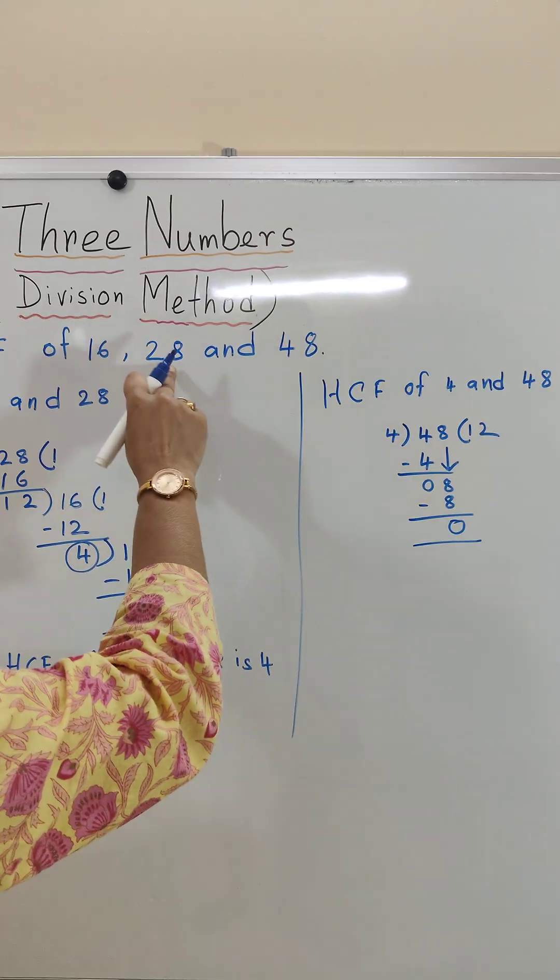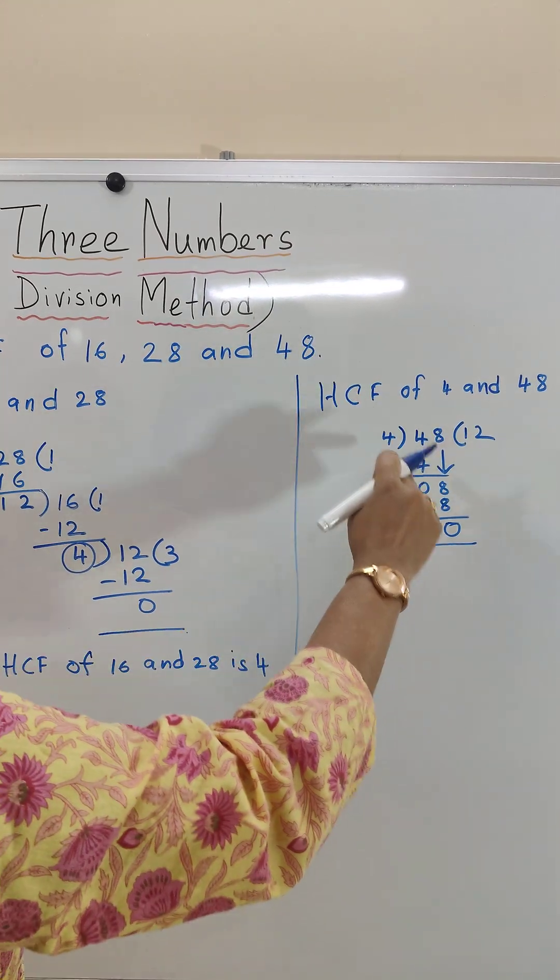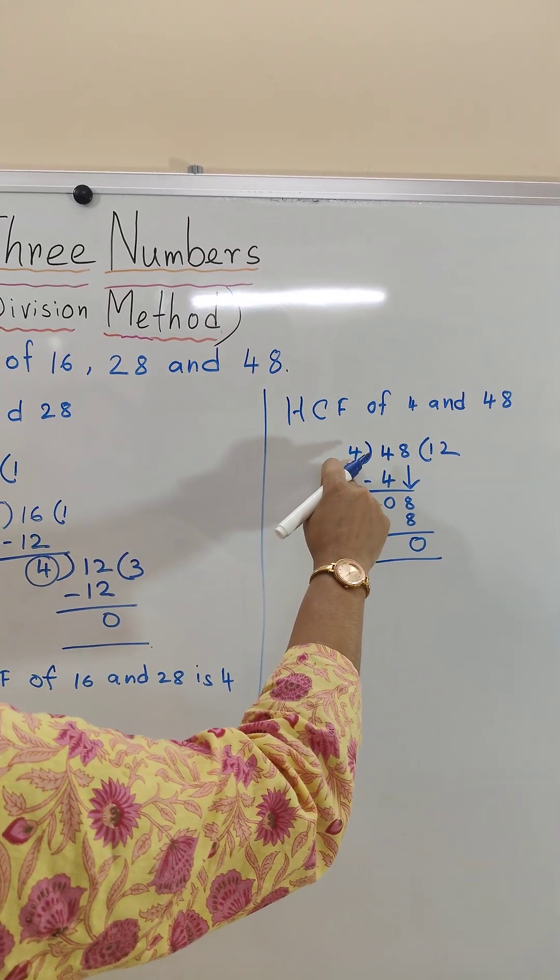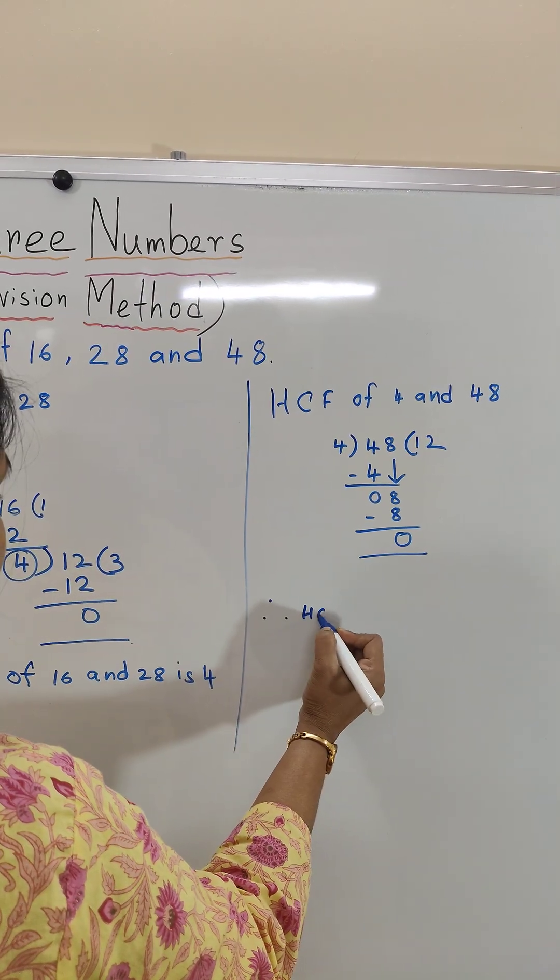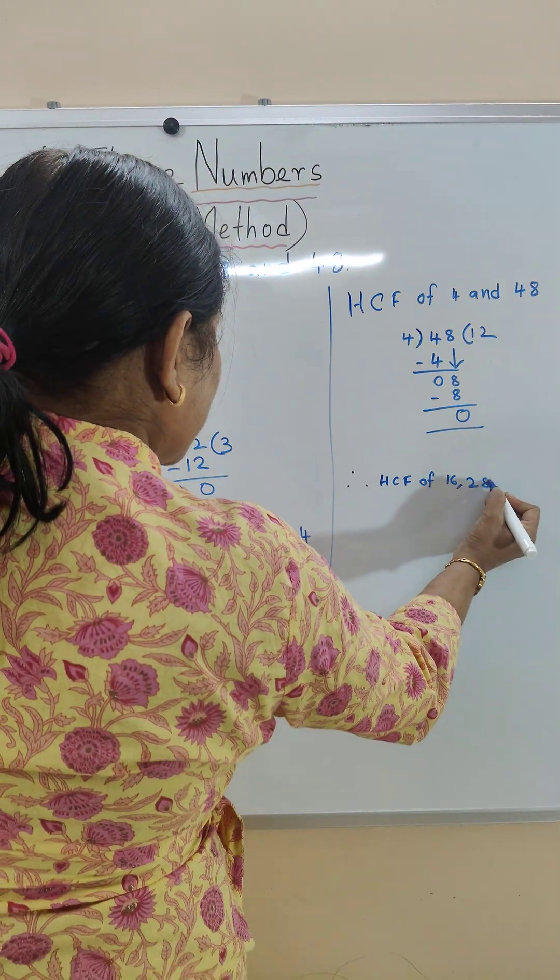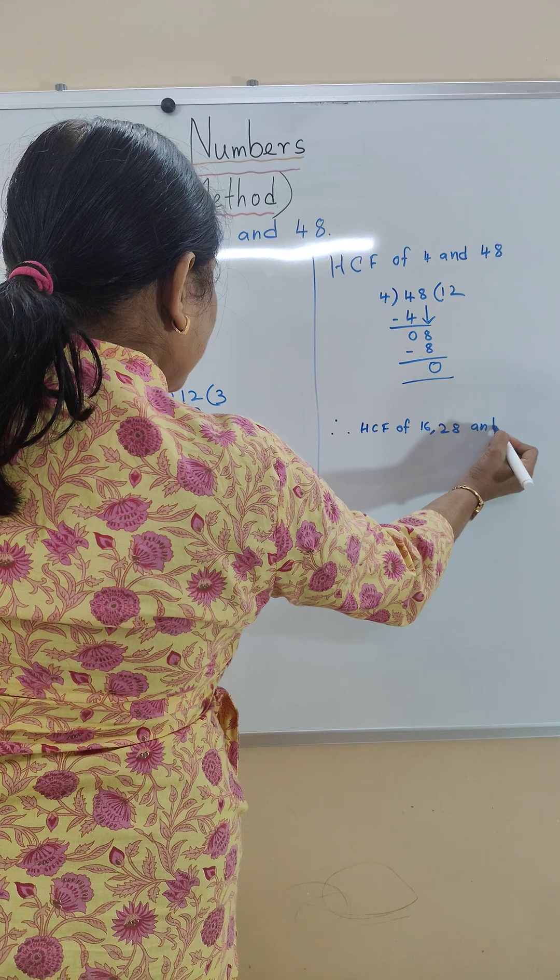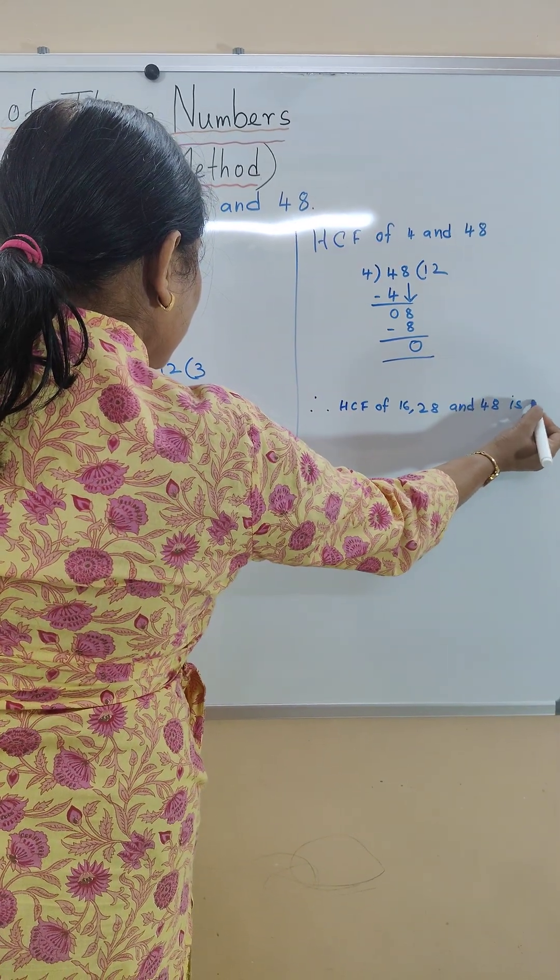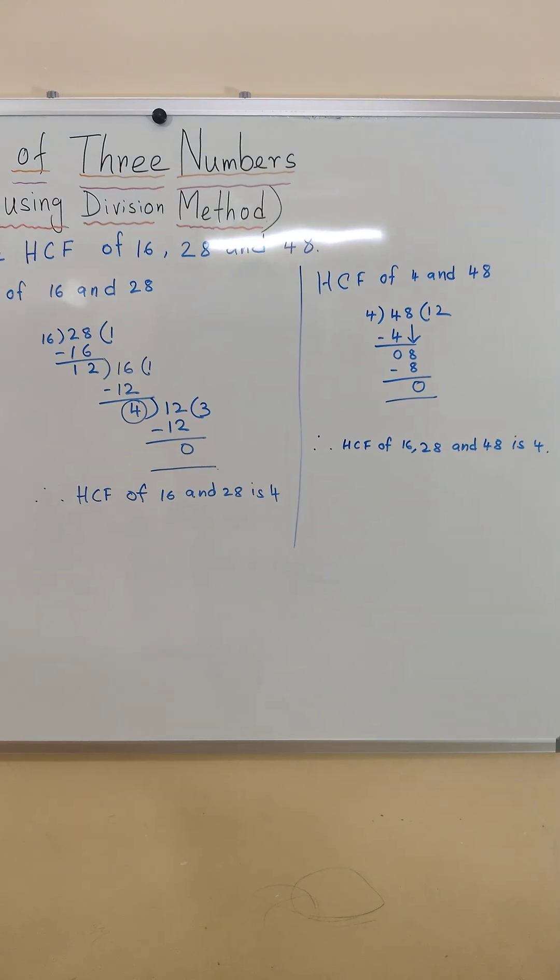Therefore the HCF of 16, 28 and 48 is 4, because 4 is the last divisor. Therefore HCF of 16, 28 and 48 is 4. I hope this video is helpful to you.